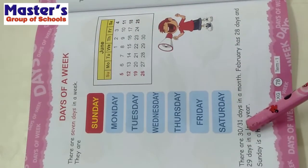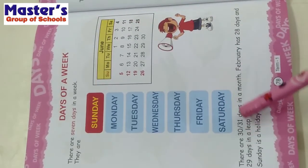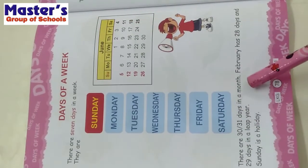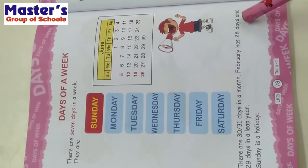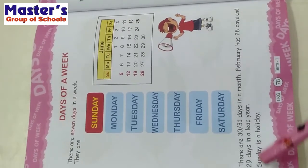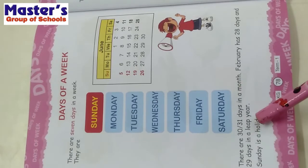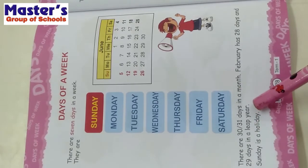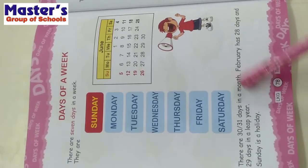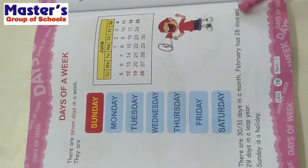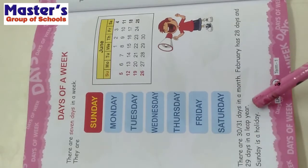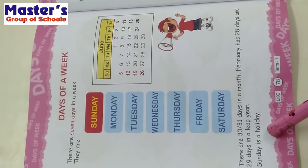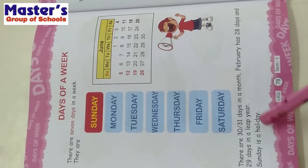There are 30 or 31 days in a month. February has 28 days and 29 days in a leap year. Sunday is a holiday. Everyone knows that Sunday is a holiday.